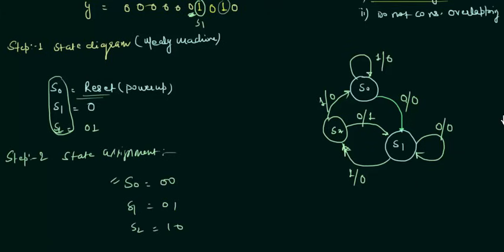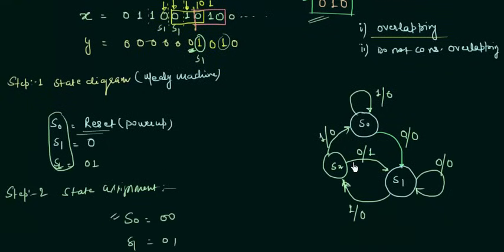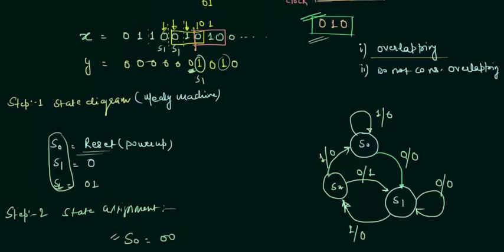I will end this presentation here. Once you have the state diagram you can develop the circuit depending on the flip-flop you want to use — D flip-flop, JK flip-flop, T flip-flop, whatever you prefer. We will cover how to make the circuit in a separate presentation. If you have any doubts about how this state diagram was obtained, you can ask in the comment section.